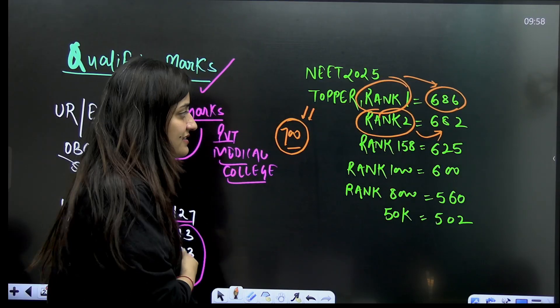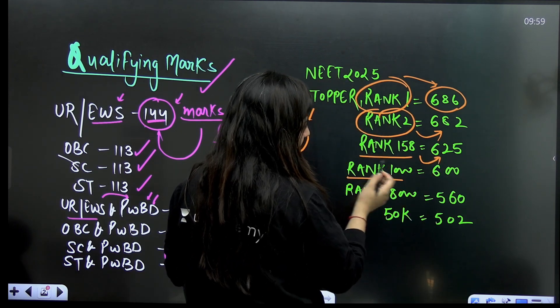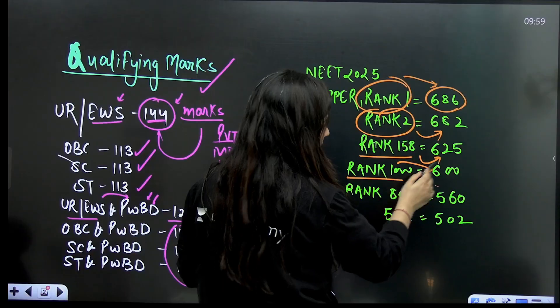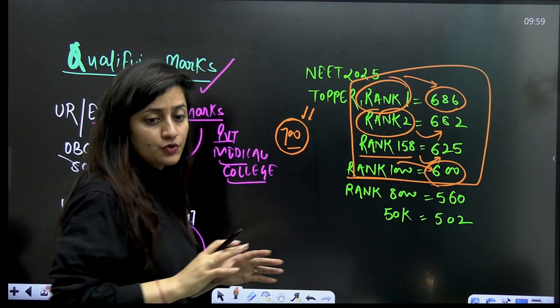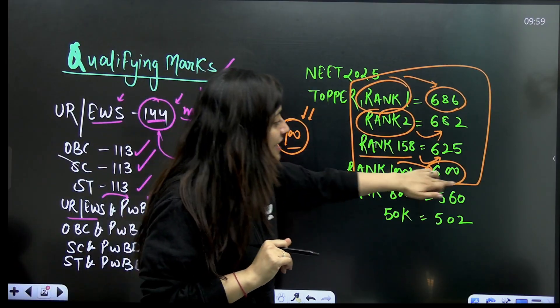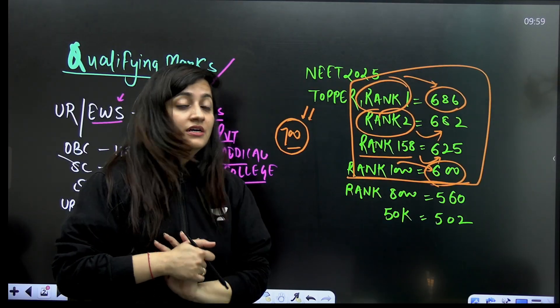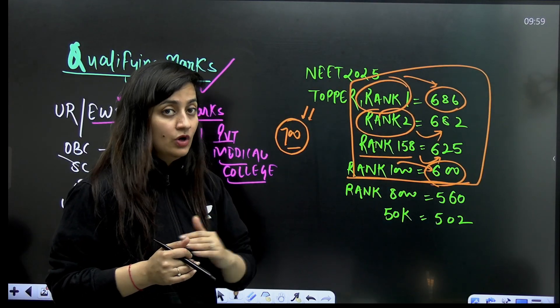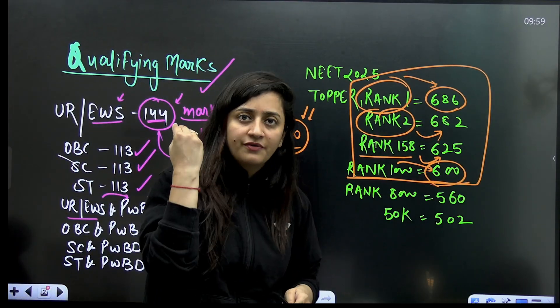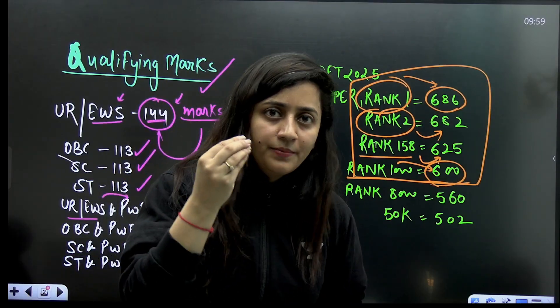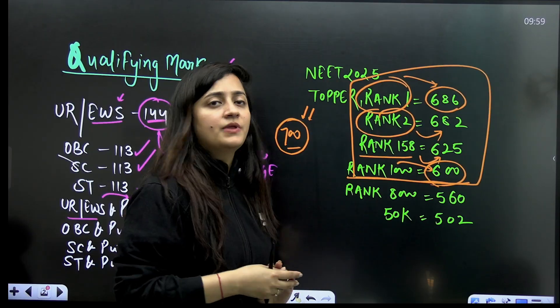This is the data: a student having rank 158 has 625 marks, having rank approximately 1600 marks. Top thousand students have their marks in the range of 686 to 600. Just imagine, this time cutoff is low if you compare with last year. You know students got 720 out of 720. Those who were getting 600 marks were not at all in top thousand category.